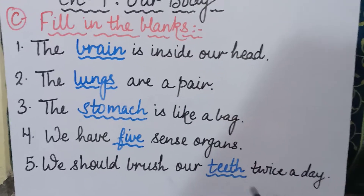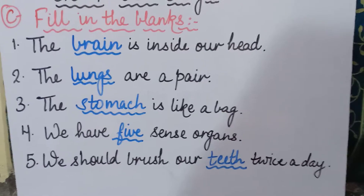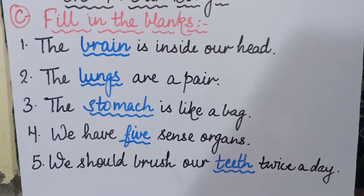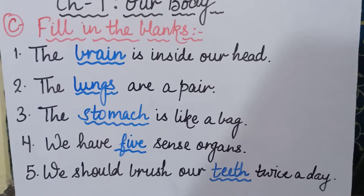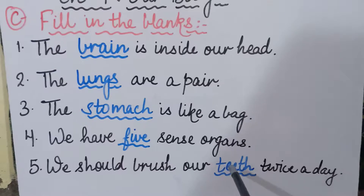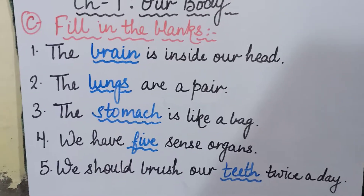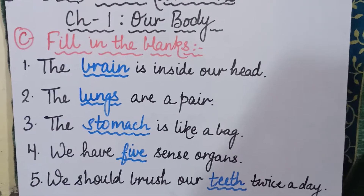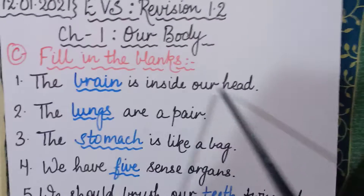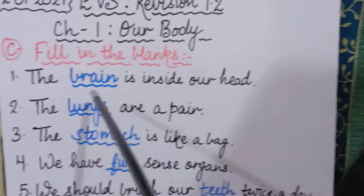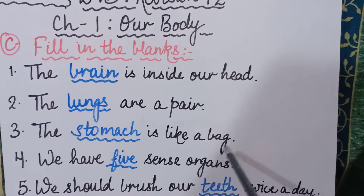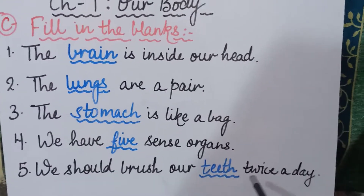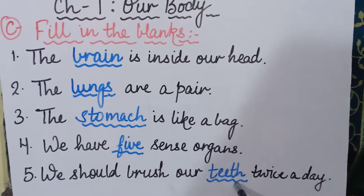Fifth sentence: we should brush our teeth twice a day — T-E-E-T-H teeth. To recap all five fill in the blanks: first, the brain is inside our head; second, the lungs are a pair; third, the stomach is like a bag; fourth, we have five sense organs; and fifth, we should brush our teeth twice daily.